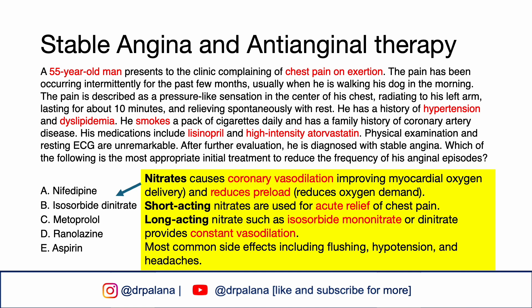Another option instead of a calcium channel blocker are nitrates. Nitrates cause coronary vasodilation, which improves myocardial oxygen delivery, and also reduce preload, which then reduces oxygen demand. There are short-acting nitrates and long-acting nitrates. Short-acting nitrates are used for acute relief of chest pain, while long-acting nitrates such as isosorbide mononitrate or dinitrate provide constant vasodilation. The most common side effects include flushing, hypotension, and headaches.